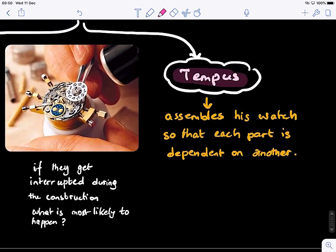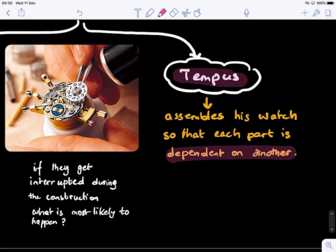Tempus assembles his watch so that each part is dependent on another. This is like a sequential way of working. You start from zero till you finish it and you're done within a few hours.